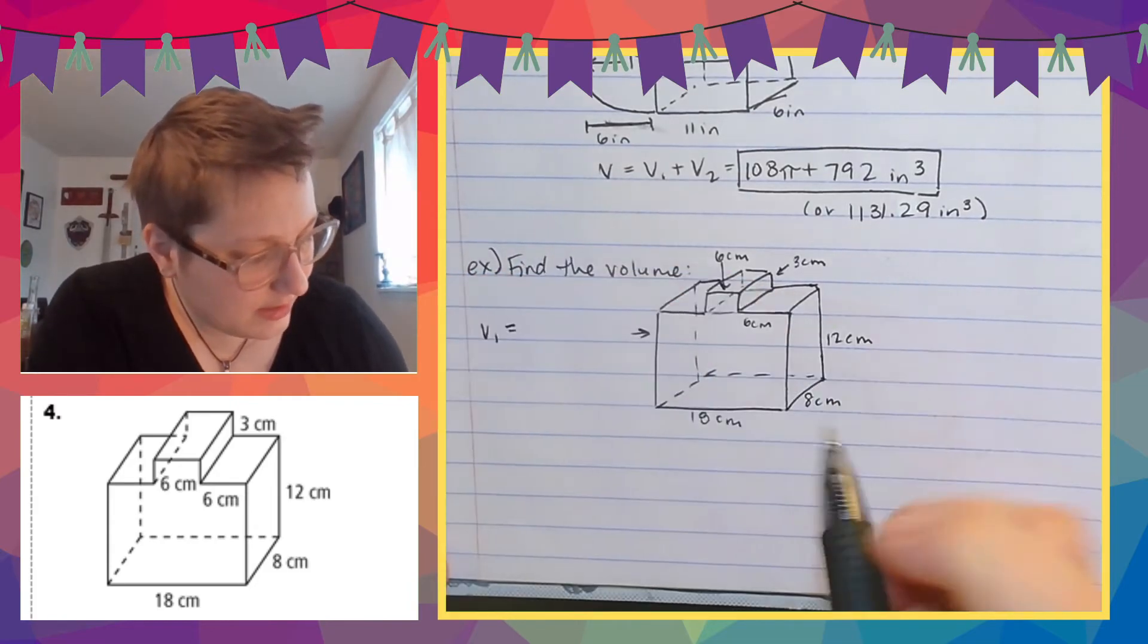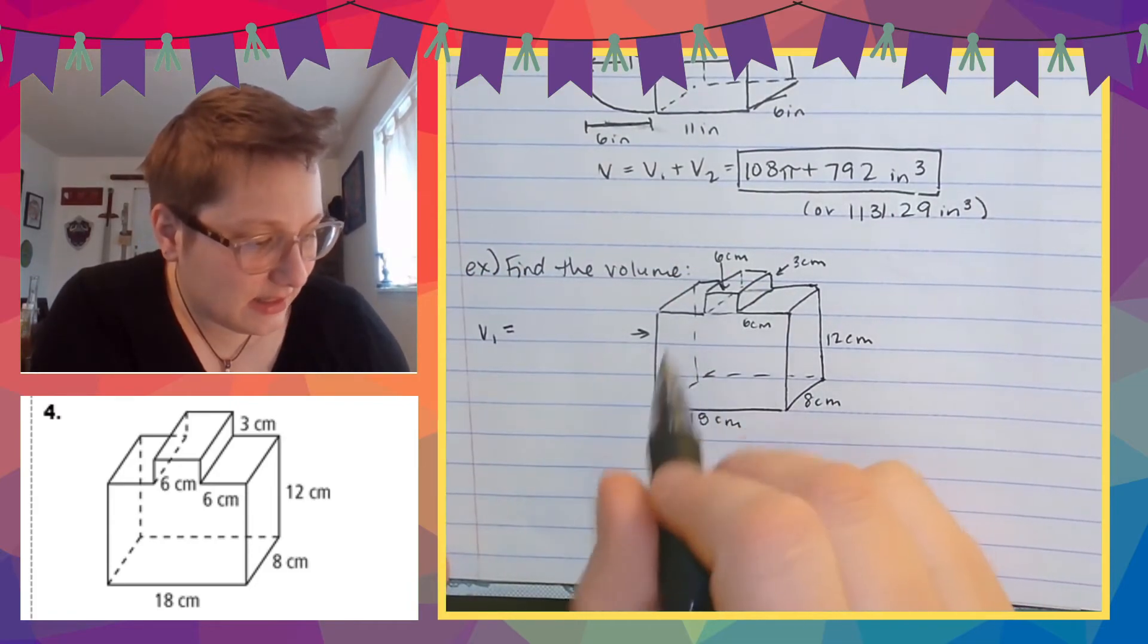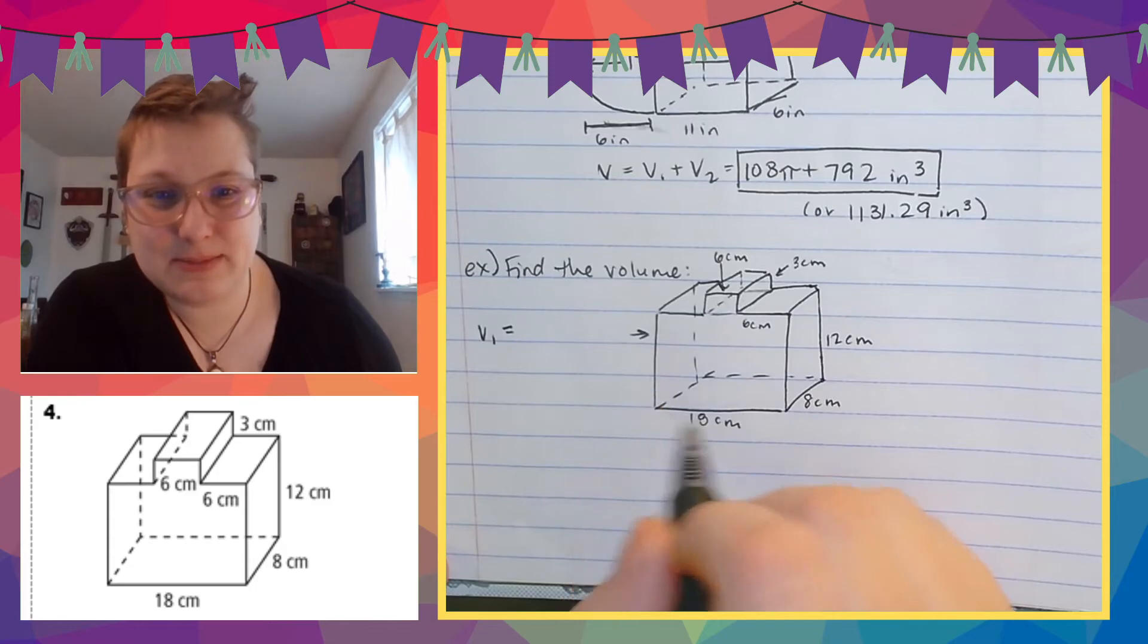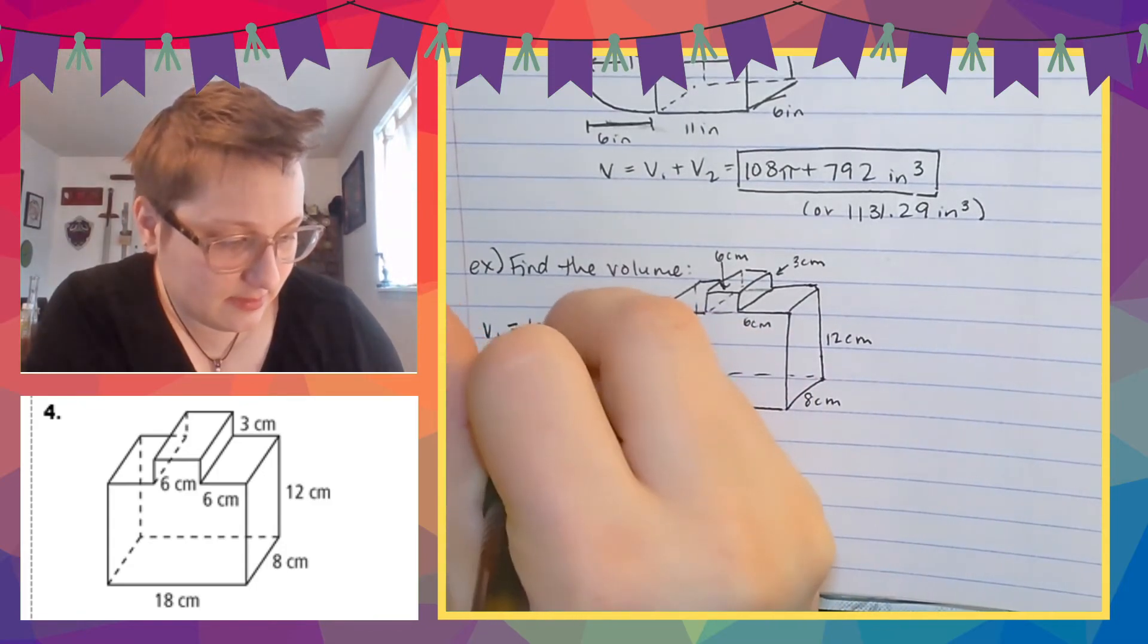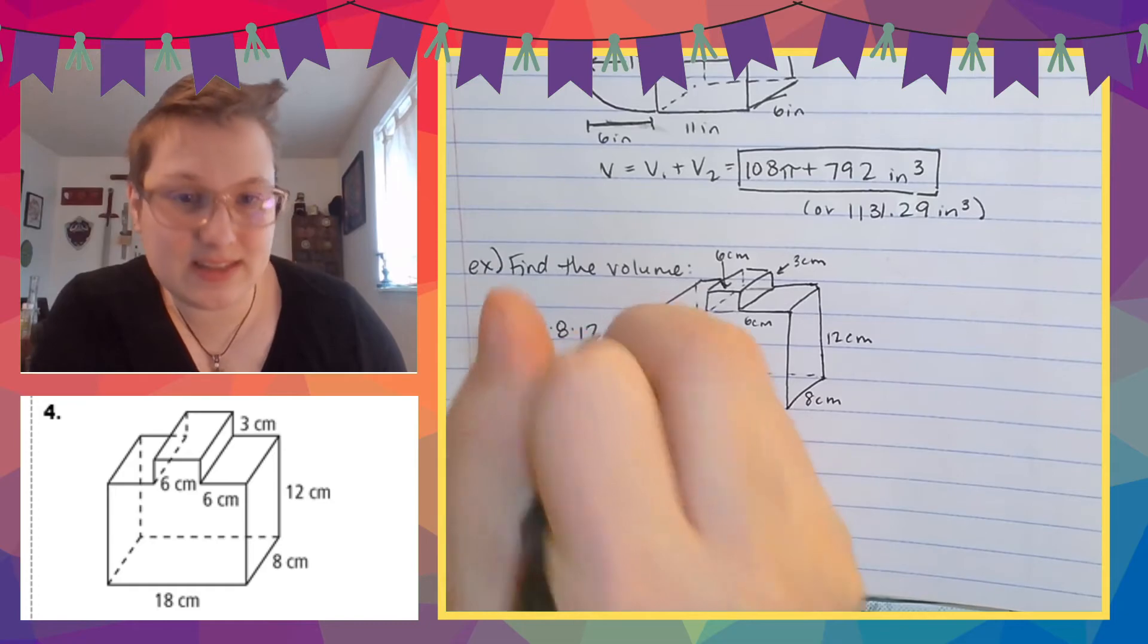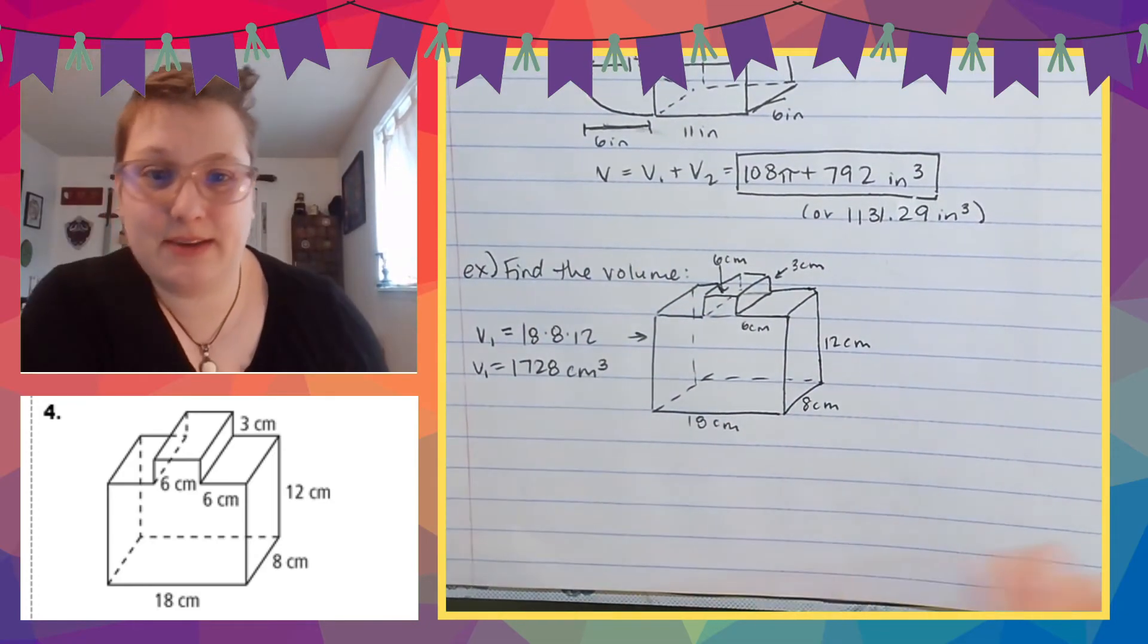So we're going to find the volume of this little piece and the volume of the big piece. So let's find the volume of the big piece. Why not? So volume one is going to be, it's this rectangular prism. So it's going to be 18 times eight times 12. Like what does that, I don't know. Great. 1728 of course.